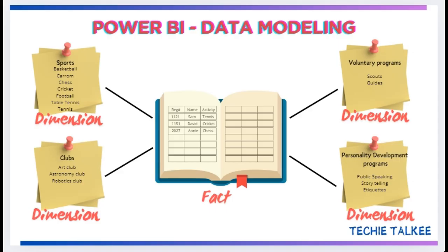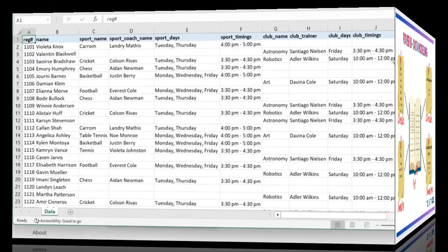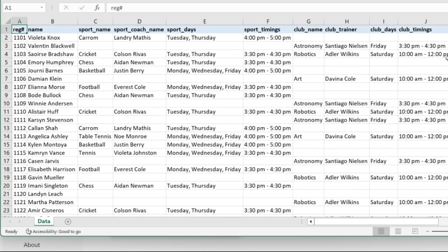Now let me explain you this star schema in Power BI Desktop with the sample data that we have created. That sample data is denormalized data and we are going to see how we are going to convert that denormalized data to a normalized set of tables. This is the denormalized data that I have created — it contains the details of the students and the various activities to which they are enrolled with.